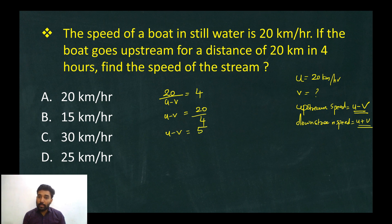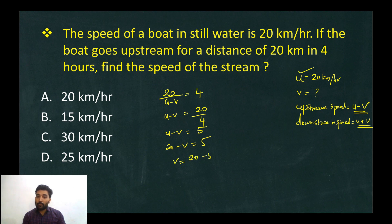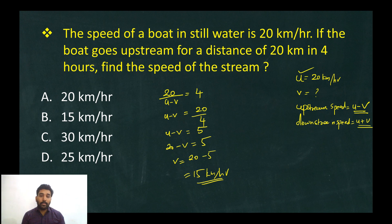The speed U is 20. So 20 minus V equals 5, which gives V equal to 20 minus 5, that is 15. The speed of the stream is 15 km per hour.